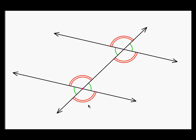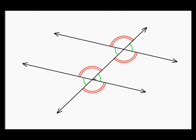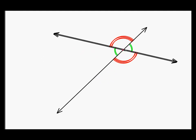Now how does this let us solve problems when we have parallel lines cut by a transversal? If I give you any two angles in this diagram, either they are going to be the same measure — like these two green angles or these two red angles — or I am going to have one of each, and they have to add together to equal 180.